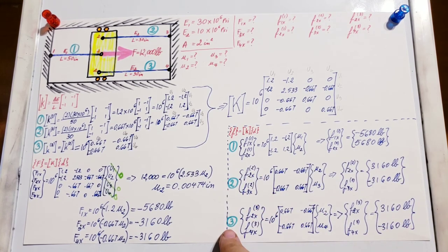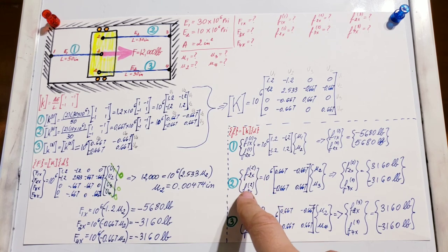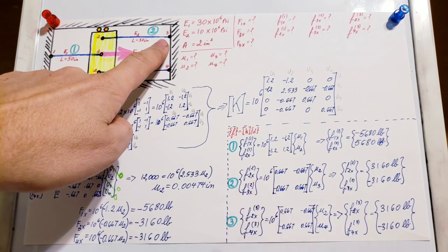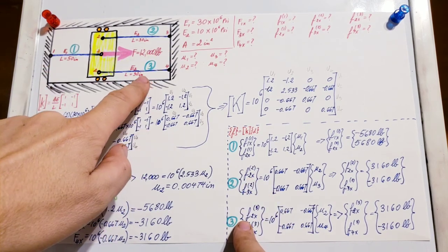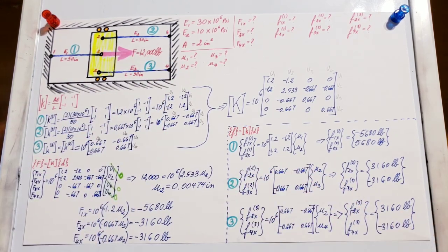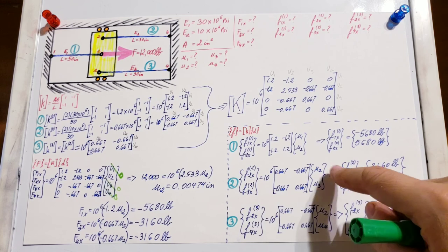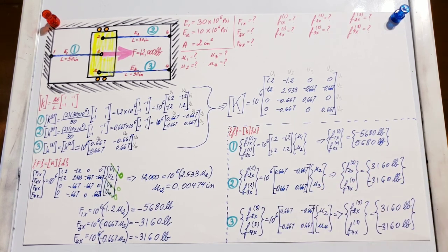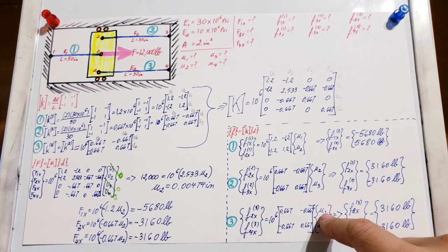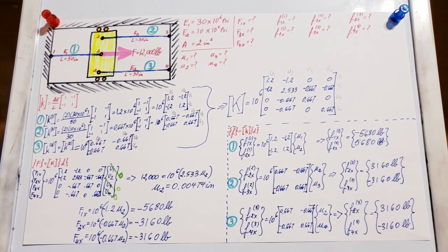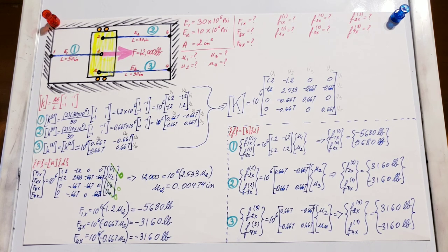The exact same process we'll follow for elements 2 and 3. Element 2 is bordered by points 2 and 3, element 3 is bordered by points 2 and 4. Same thing is represented throughout: displacements at u2 and u3 for element 2, displacements at u2 and u4 for element 3. Solve the matrices and here you can see our values for local forces.